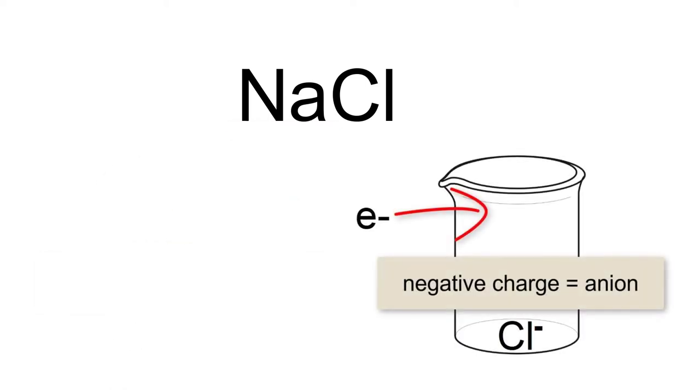Then by default, the anion must be our second element, which in this case is going to be chlorine, the name for the element for the symbol Cl.